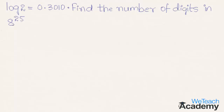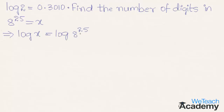Let us assume 8 raised to the power 25 is equal to x, and writing log on both sides. We get log x is equal to log 8 raised to the power 25. This is in the form of log a raised to the power m, which is equal to m log a.